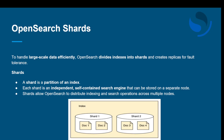To handle large-scale data efficiently, OpenSearch divides indexes into shards and creates replicas for fault tolerance. A shard is a partition of an index. Each shard is an independent, self-contained search engine that can be stored on a separate node. Shards allow OpenSearch to distribute indexing and searching operations across multiple nodes. As shown on screen, each index has its own shards which store documents.